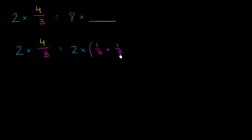1 third plus 1 third plus 1 third plus 1 third. This is literally, if you call each of these a third, you literally have four of them. This is 4 thirds. 2 times 4 thirds is the same thing as 2 times, literally 4 thirds.